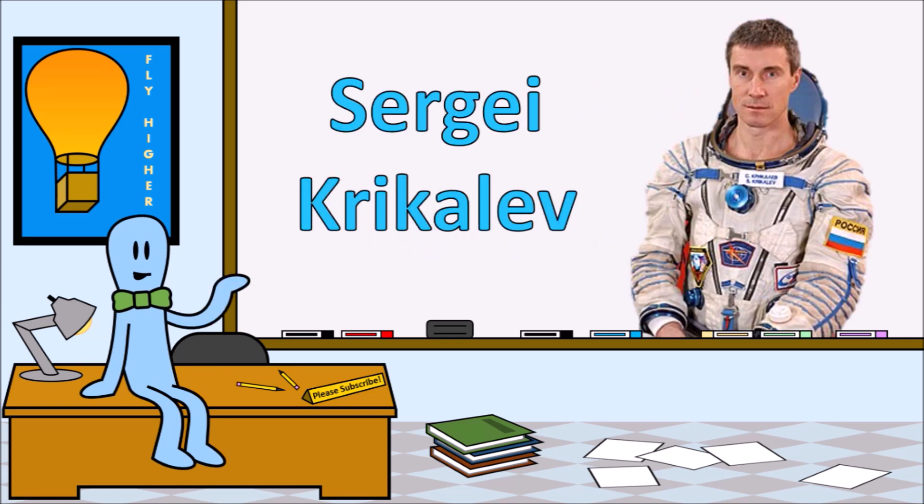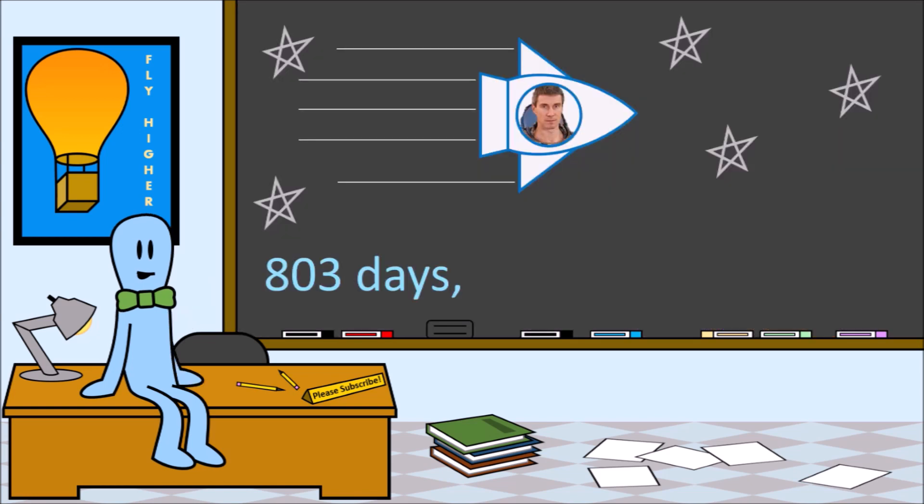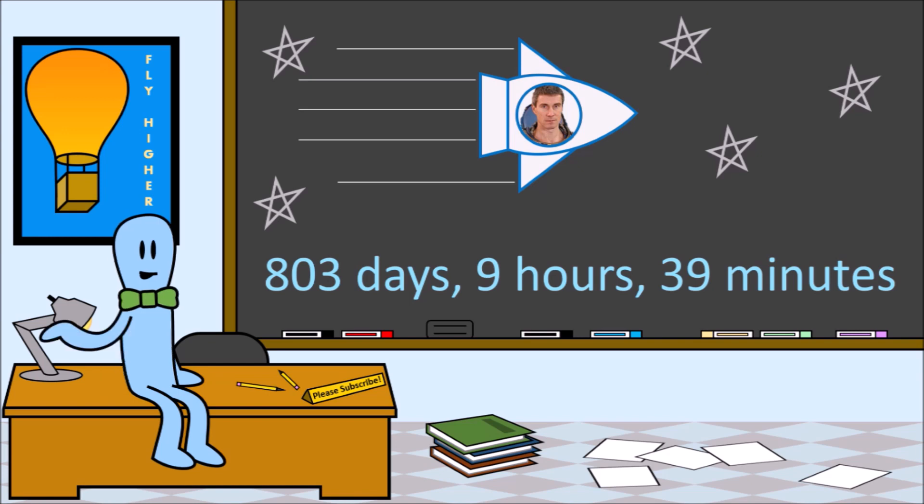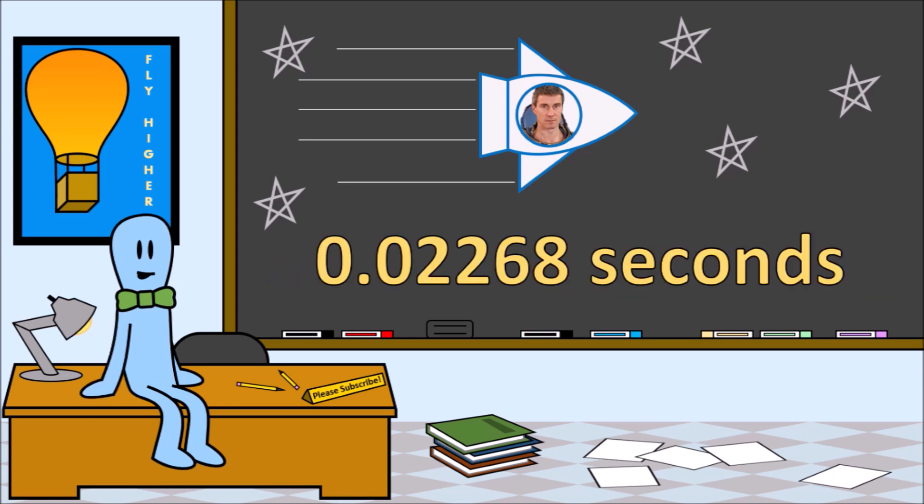This is Sergei Krikalev, a Russian astronaut and today's most famous time traveler. Krikalev spent a total of 803 days, 9 hours, and 39 minutes in space orbiting around the Earth at high speed. In doing so, Krikalev holds the record for being the human to experience the most time dilation, traveling about 0.02268 seconds into the future.